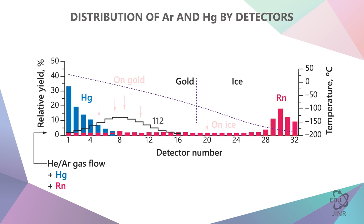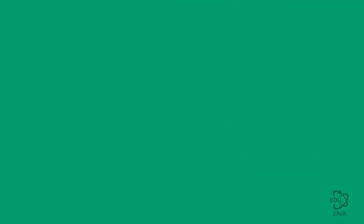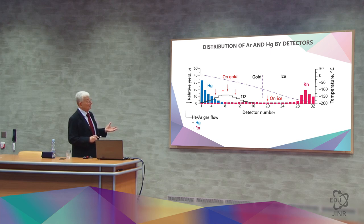The five events of element 112 were spread out like this. It is very interesting that all of them took place on the left side of the diagram, where mercury was, but they clearly do not repeat the profile of mercury.